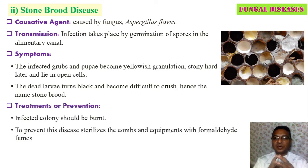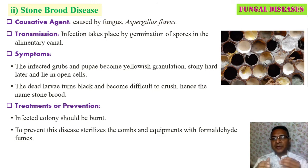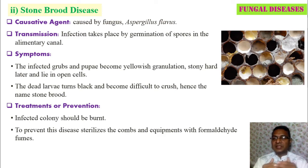For treatment and prevention of stone brood disease: when symptoms are observed, the infected colony must be separated from other colonies and burned — there is no other option. During handling, all equipment should be sterilized before and after handling the colony using formalin fumes. This is very important to keep such diseases away from the colony and maintain a strong, healthy colony.